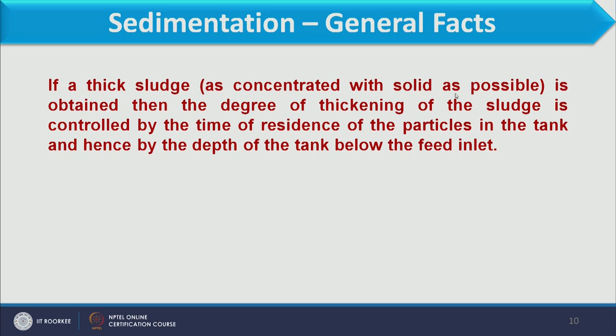If a thick sludge as concentrated with solids as possible is desired, the degree of thickening is controlled by the residence time of particles in the tank, and hence by the depth of the tank below the feed inlet. So for obtaining clarified liquid, diameter is the main concern, while for thick sludge production, height is the main concern of the thickener. These are the two key design factors.